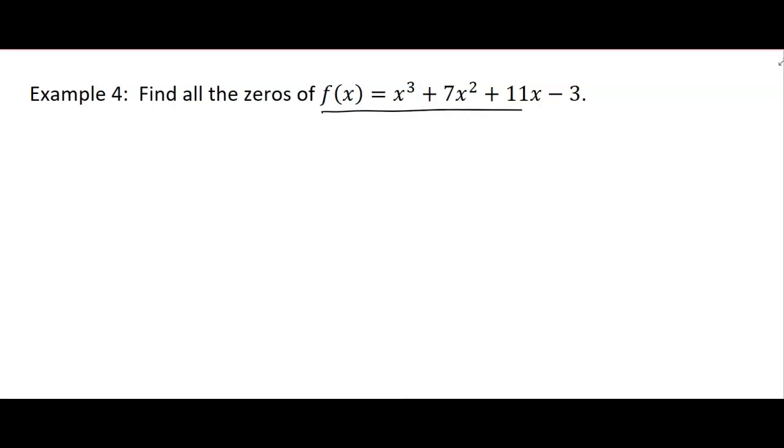So it does look like the last problem. Here's the polynomial, we're trying to find the zeros. We're going to start with the possibles. So what are the factors of p? Well, you're looking at that last term. So plus or minus 1, plus or minus 3.